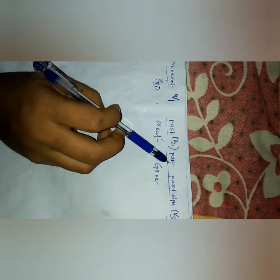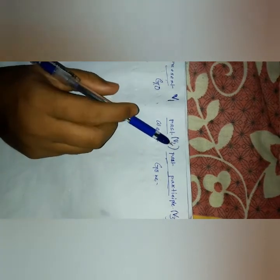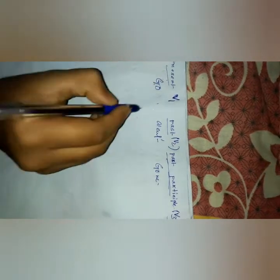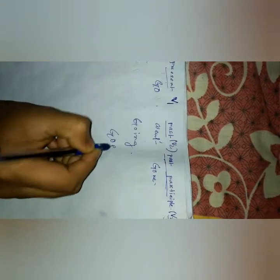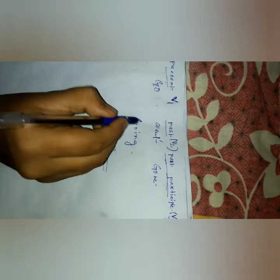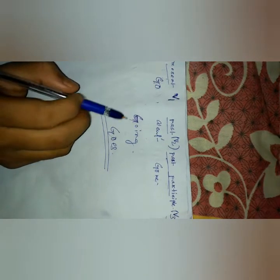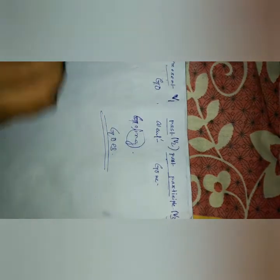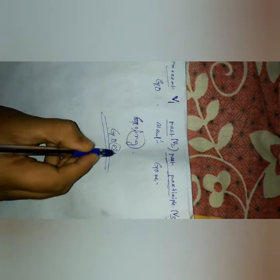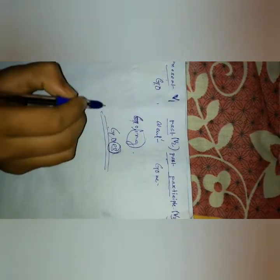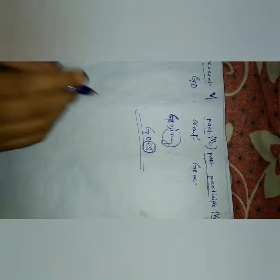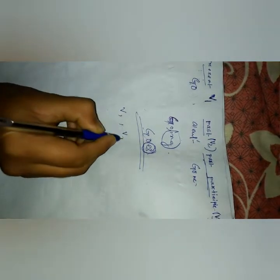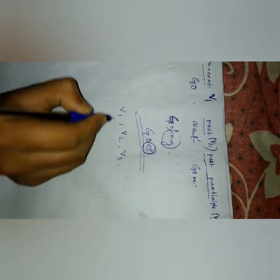For present participle, we add 'ing' to make 'going'. And for third person singular, we add 's' to make 'goes'. So we have 'going' and 'goes'.